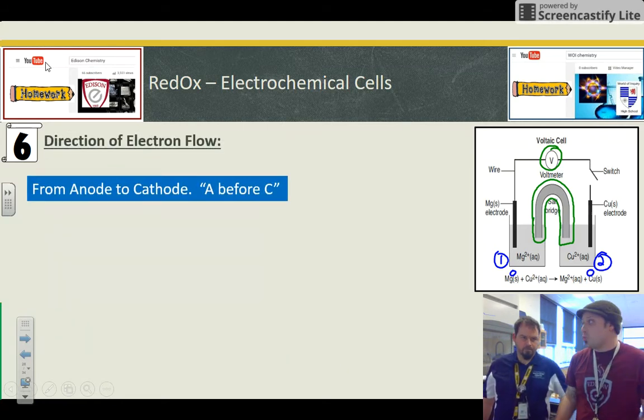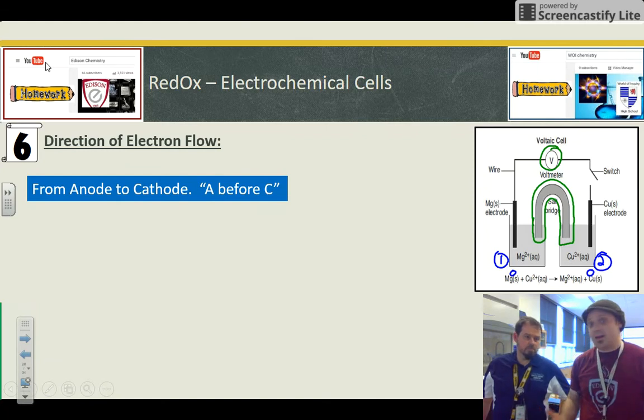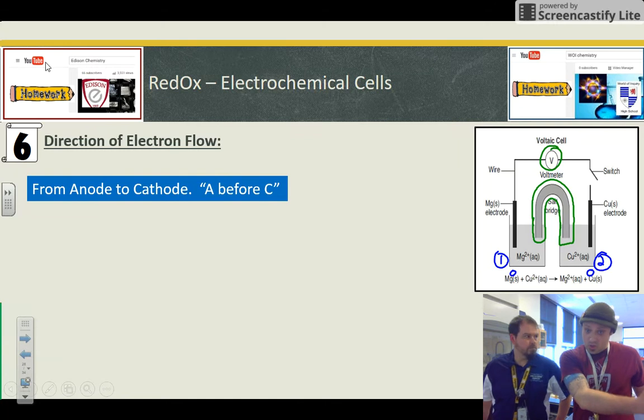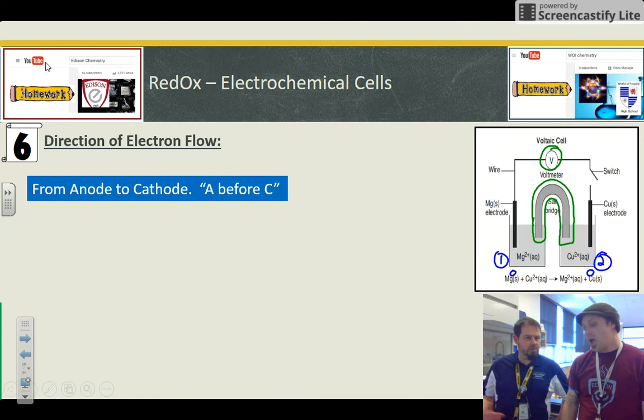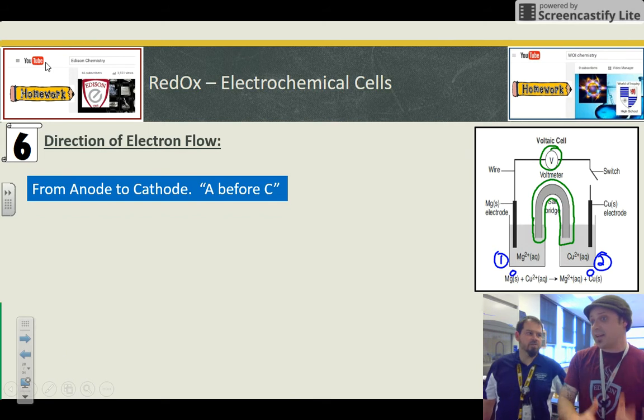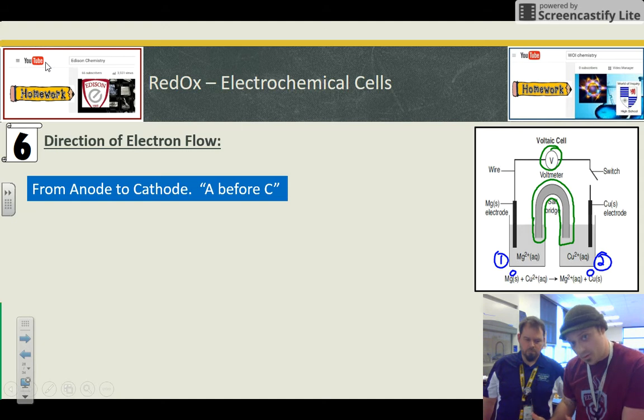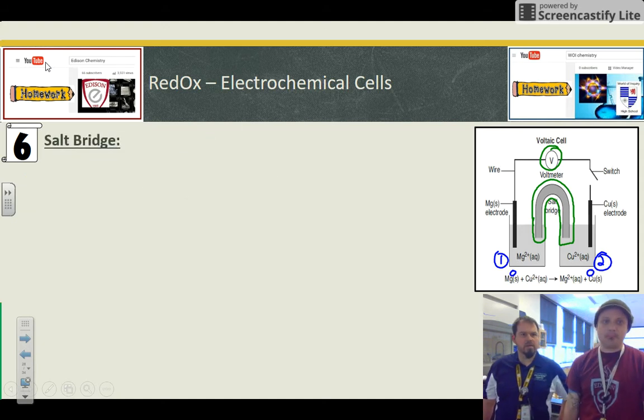So the directional electron flow is really easy because if you know your alphabet, A always comes before C. The electrons travel from the anode through the wire to the cathode. That's how you remember, A before C. There's another way to look at it. The more active metal is always the anode. Active anode will lose electrons to the not so active cathode.